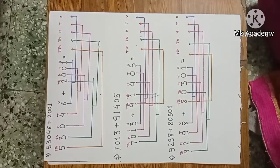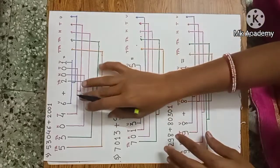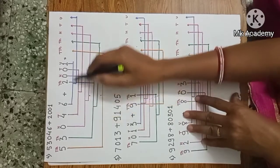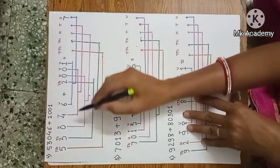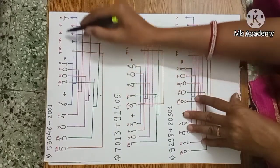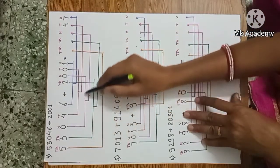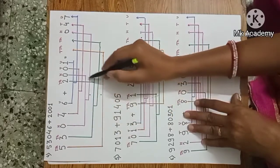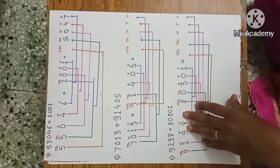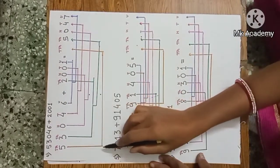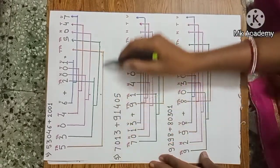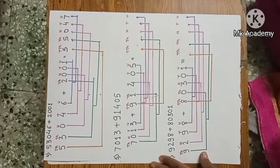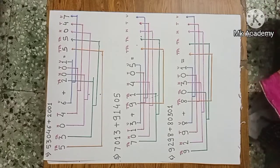Fourth example: 53,046 plus 2,001 in horizontal addition. Start from unit place: 6 units plus 1 unit is 7. Tens: 4 tens plus 0 tens is 4. Hundreds: 0 plus 0 is 0. Thousands: 3000 plus 2000 is 5000. Ten-thousands: 5 as it is. The answer is 55,047.